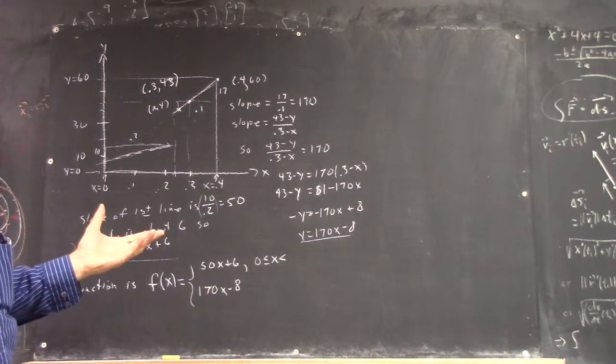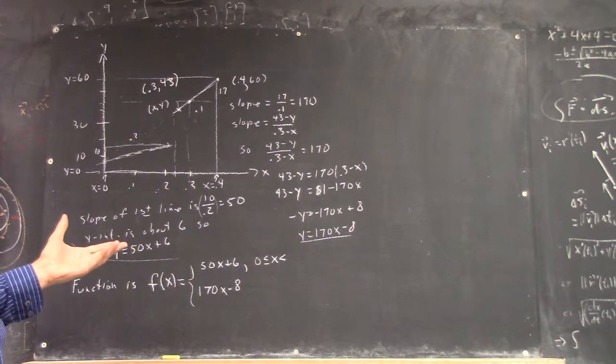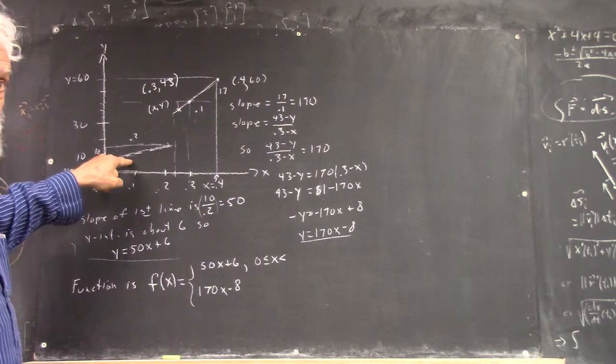Zero to what? For what value of x does this thing end?